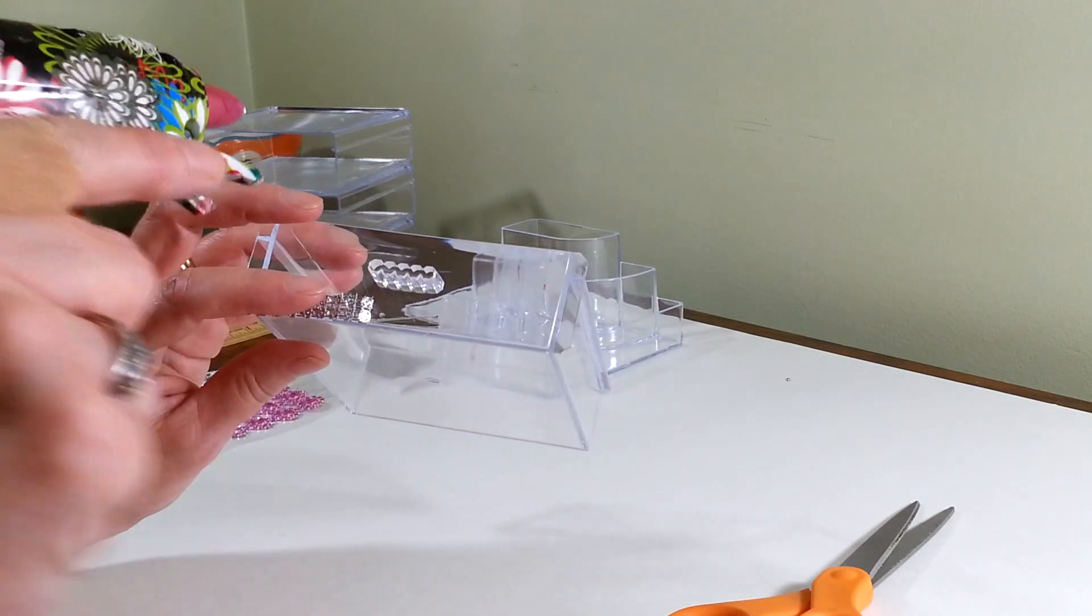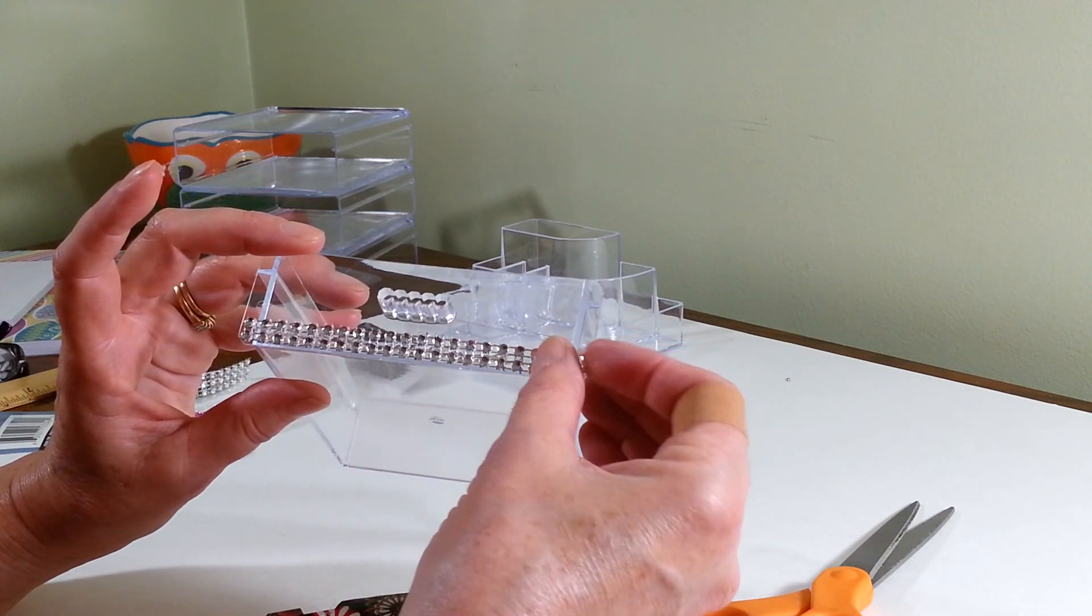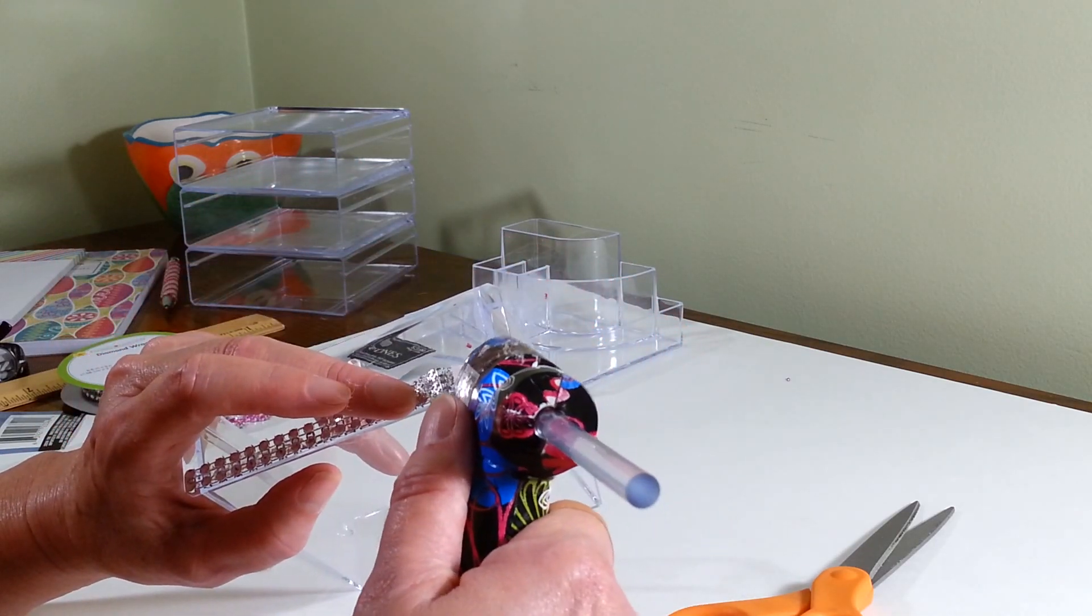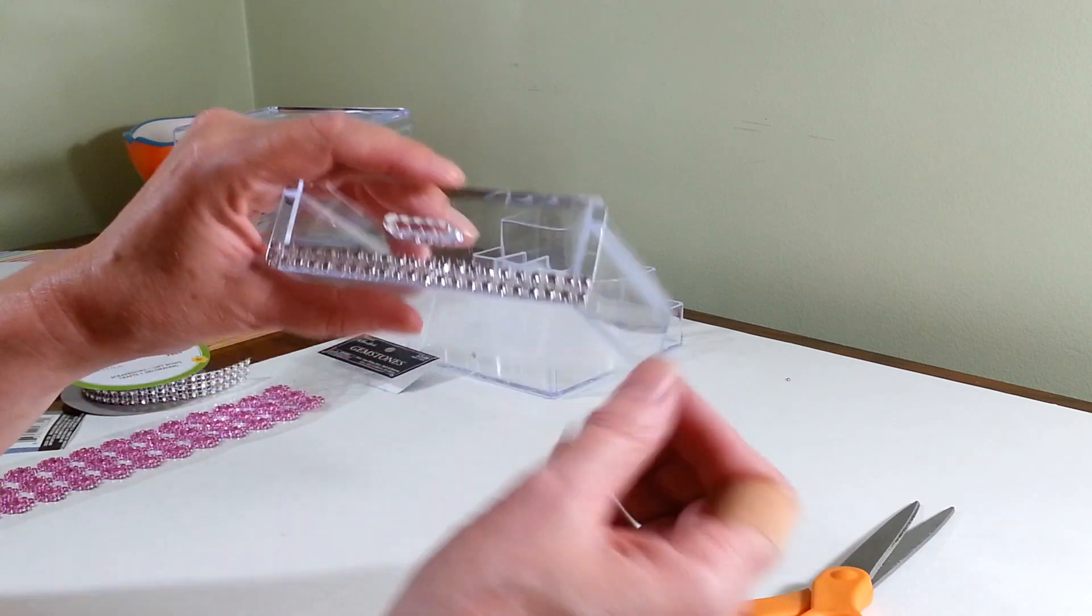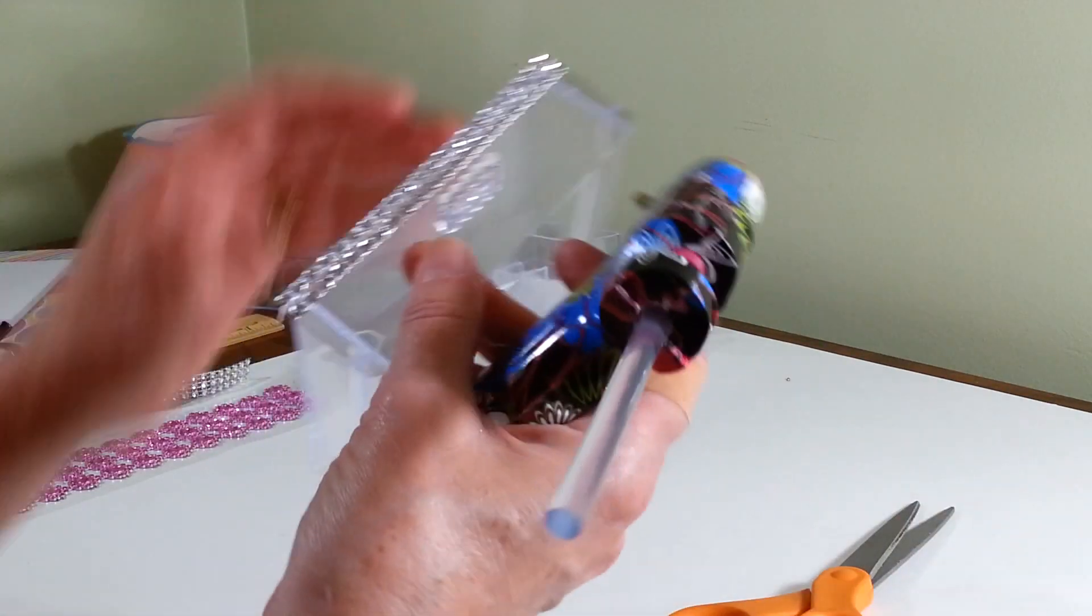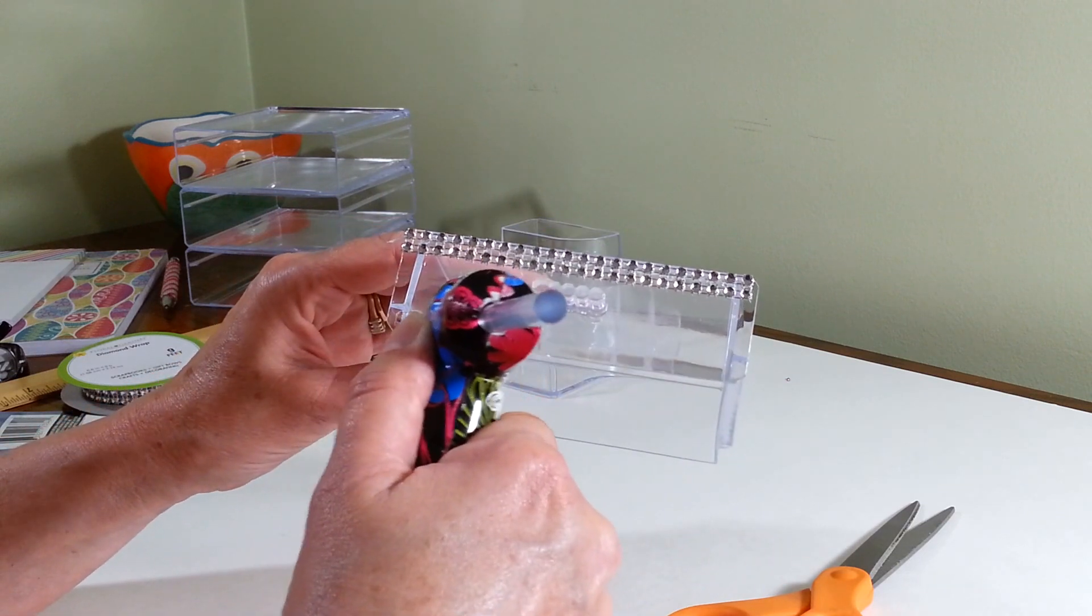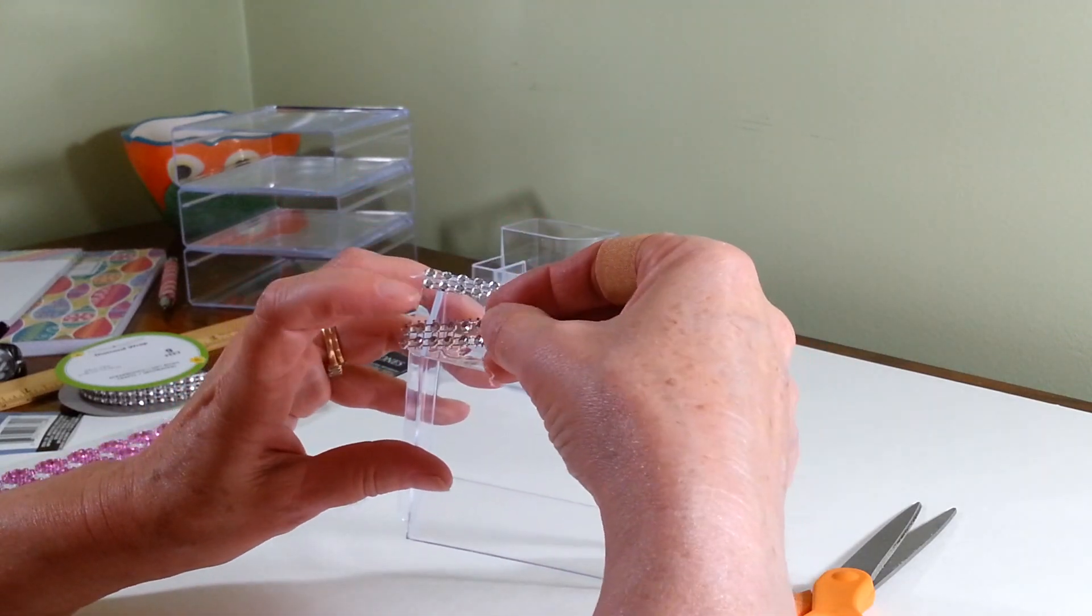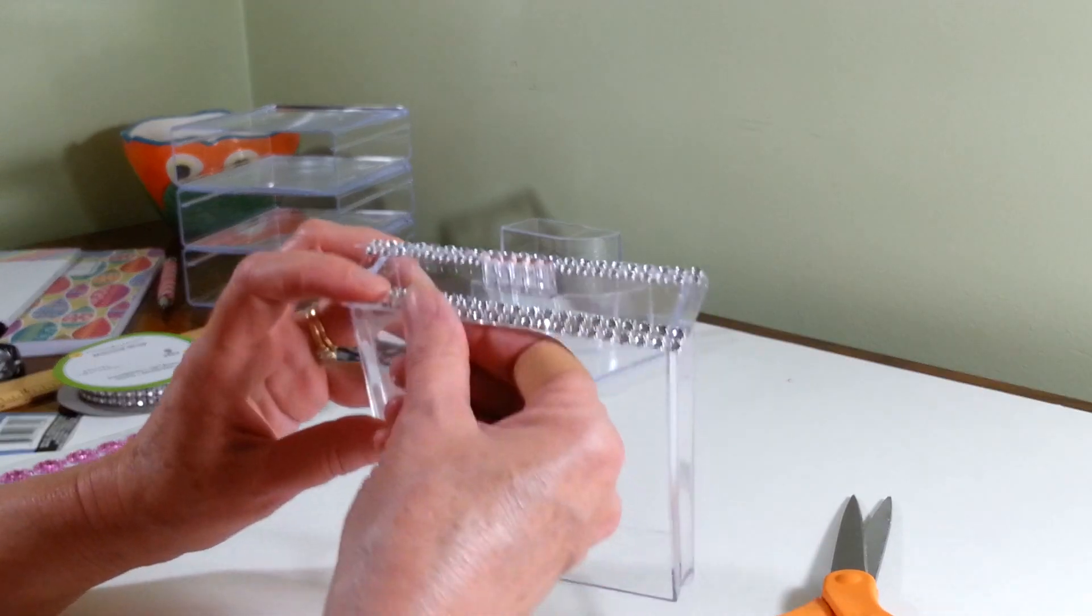I'm going to wiggle some more. All right, that's the bottom of our drawer and I'm going to do the same thing across the top edge, making sure it's nice and even. Looking good.